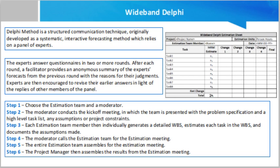Disadvantages: Management support is required, and the estimation results may not always align with what management wants. The Wideband Delphi technique is a simple way of creating estimates based on consensus. It extends the Delphi estimation by adding a group communication stage and an iterative loop. The Wideband Delphi estimation method was originally developed in the 1940s at the RAND Corporation as a forecasting tool.